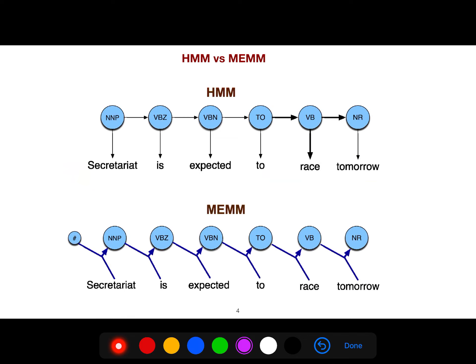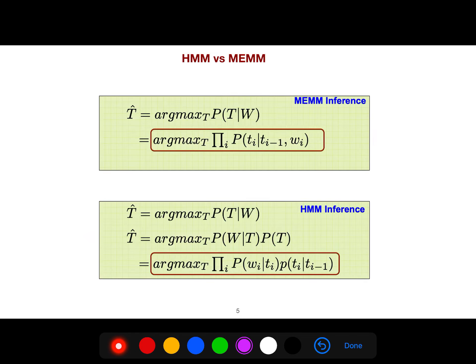And so HMM and MEMM, as you see, the direction for HMM, as I said, is from latent variable to observation, but for MEMM is quite the opposite. The MEMM inference is like this, but HMM needs to multiply two probabilities.